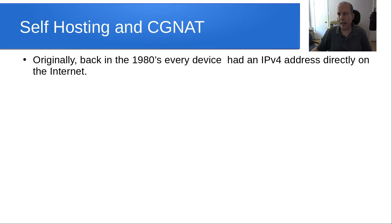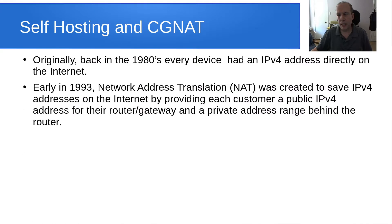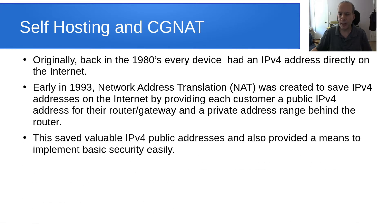Originally back in the 1980s, every device had an IPv4 address that was directly on the internet. Early in 1993, network address translation was created to save IPv4 addresses on the internet by providing each customer a single IPv4 address for their router or gateway and a private address range behind that router. This saved valuable IPv4 public addresses and also provided a means to implement basic security easily.